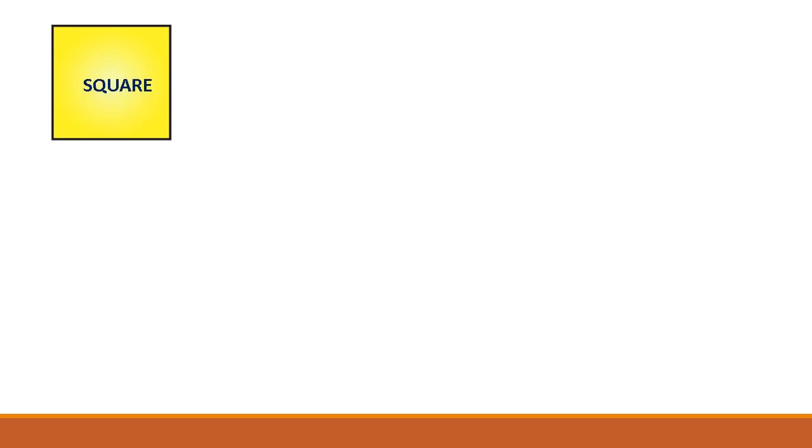It is a square. It has 4 sides: 1, 2, 3, 4 — 4 sides and 4 corners: 1, 2, 3, 4. And all the sides are equal. All the sides are equal and it is a closed shape. These 4 corners are equal.